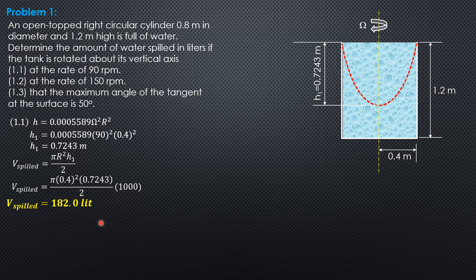Then when the speed is 150 RPM, substitute again to solve for H2. So 0.0005589 times 150 square, 0.4 square, and that would be 2.012 meters which is greater than 1.2. So the parabolic surface will go beyond the bottom and so the bottom is exposed. There is an exposed volume here.